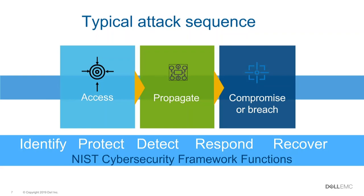There are other things hackers will do to try to gain access into IT environments. Once they gain that initial access, there's typically a pattern of propagation — they see how far, wide, and deep they can plant the attack into an ecosystem — so that when they push the button to attempt the compromise or breach, they have as large an impact as possible. This helps them demand ransoms or other payments. So: gain access, propagate it, find a way to compromise — that's the typical attack sequence.